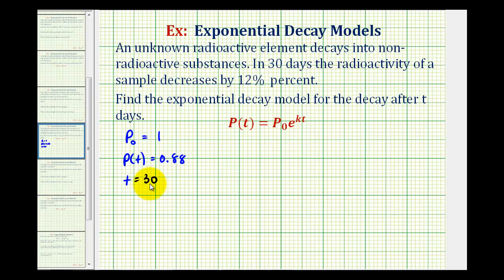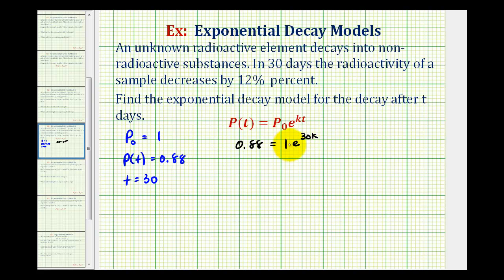Now we can substitute these values into our exponential decay model and determine the value of k, our exponential decay rate. We want to solve: 0.88 = 1 · e^(k·30), and since multiplying by one doesn't change anything, we can write this as 0.88 = e^(30k). This is one nice benefit of using one as the initial amount.